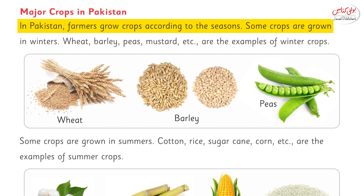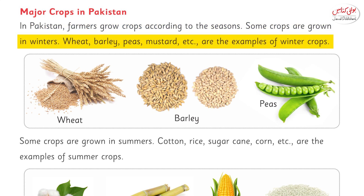Some crops are grown in winter. Wheat, barley, peas, mustard, etc. are the examples of winter crops.